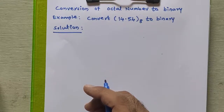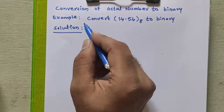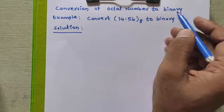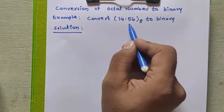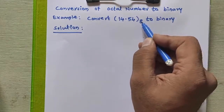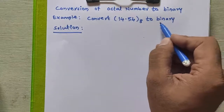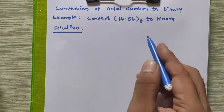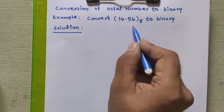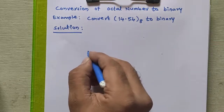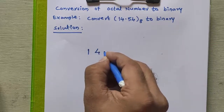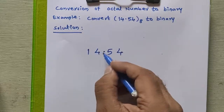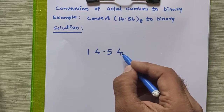Hello everyone. In this tutorial we are going to study how to convert an octal number to binary. Consider this number given to us, that is 14.54 octal. We have to convert this number to binary. To convert it into binary, for each octal digit given to us — that is 1, 4, point, 5, 4 — we have to write the three-bit binary equivalent.